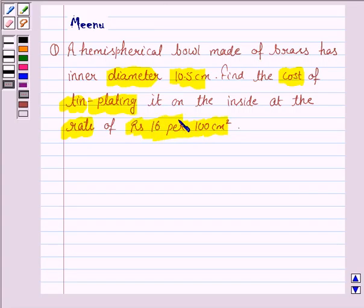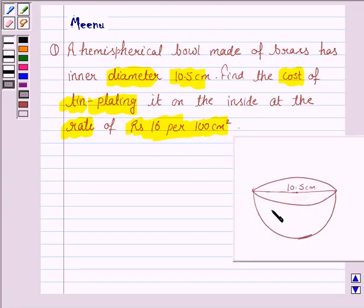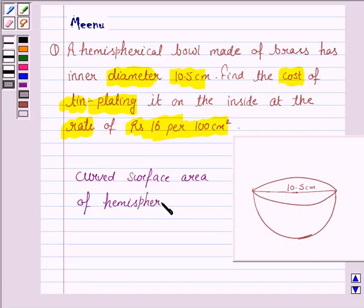Now we have to find the cost of tin plating it on the inside at the rate of Rs. 16 per 100 cm square. That means we have to find the cost of tin plating this area. That is the curved surface area. So we need to find the curved surface area of the hemisphere.